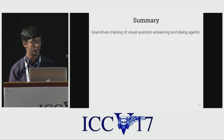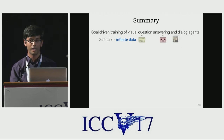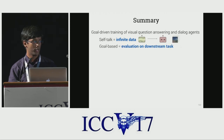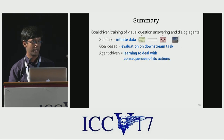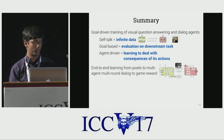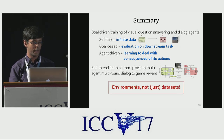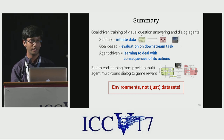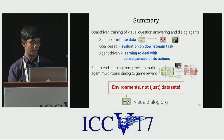To summarize, we introduce goal-driven training of visual question answering and dialogue agents. These agents are trained via self-talk, giving access to virtually infinite data. Training and evaluation is goal-based, so we evaluate performance on the downstream task of image guessing. Dialogue is agent-driven, so agents learn to deal with the consequences of their actions. We propose end-to-end learning from pixels to multi-agent multi-round dialogue to game reward. Code, pre-trained models, and the visual dialogue dataset are available on visualdialogue.org. Thank you.